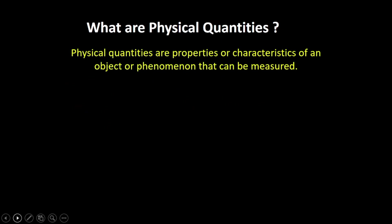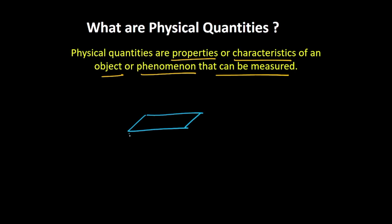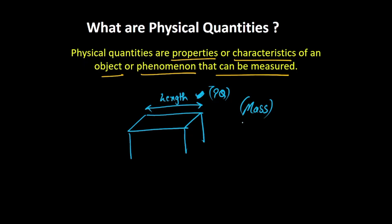The precise definition of a physical quantity is: physical quantities are the properties or characteristics of an object or a phenomenon that can be measured. For example, you have a table and you want to take measurements of this table. You take a scale and measure a particular side — we call this length. Length can be characterized as a physical quantity because it is something that can be measured. Similarly, for this table you can measure its mass, and you can measure its volume. So all these things — volume, mass, length — are what are called physical quantities.